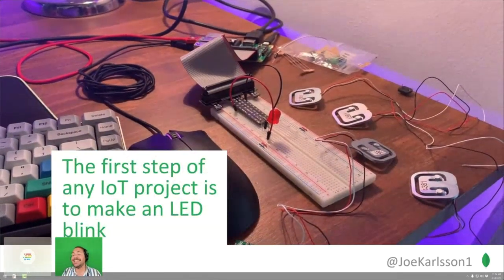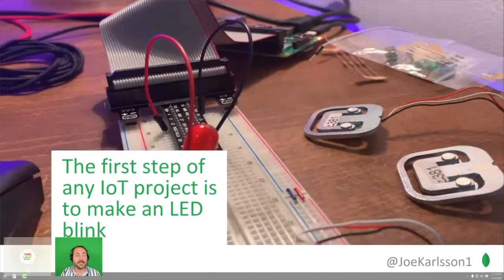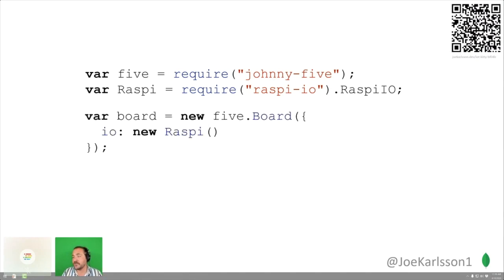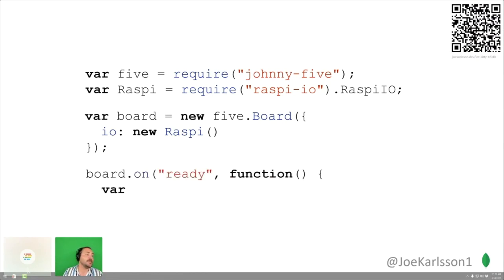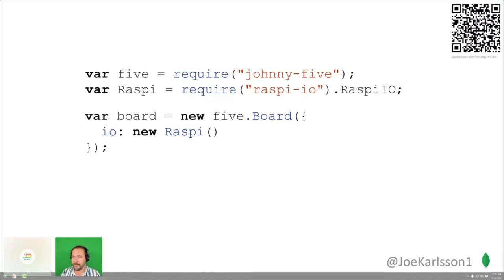The first step for building an IoT project is making an LED blink — the hello world of IoT. With Johnny5, all you're doing is bringing in the Raspberry Pi package, initializing a new Johnny5 board telling it it's a Raspberry Pi. Once the board's ready, you instantiate a new LED on the 13th GPIO pin, and there's a built-in function telling it to blink. That's it. It's super expressive and easy to use.